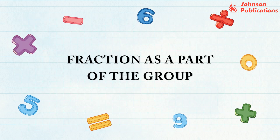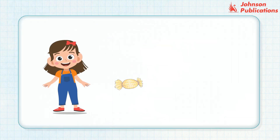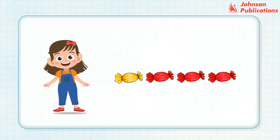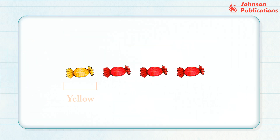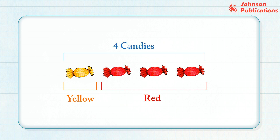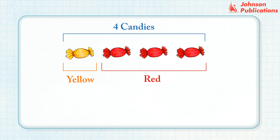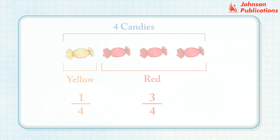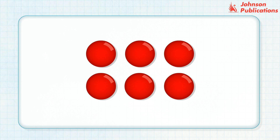Fraction as a part of the group. Tina has four candies — one yellow candy and three red candies. There are four candies in all. One fourth of the candies are yellow and three fourths of the candies are red.